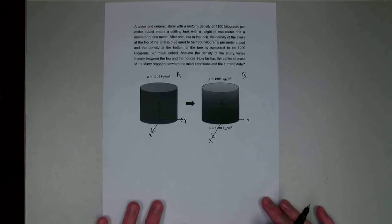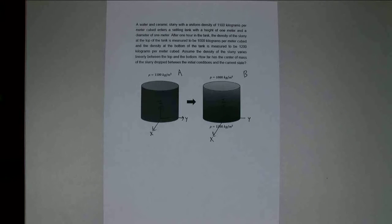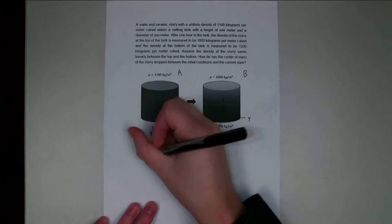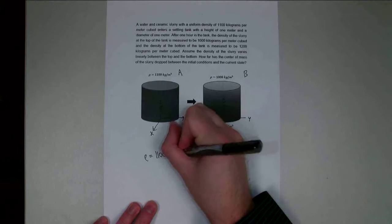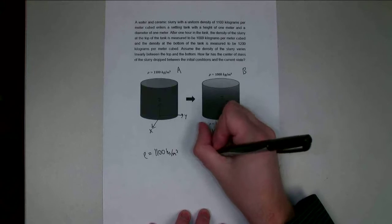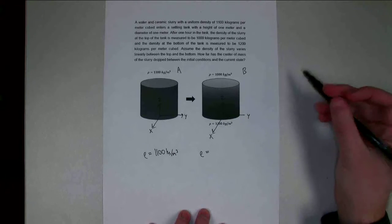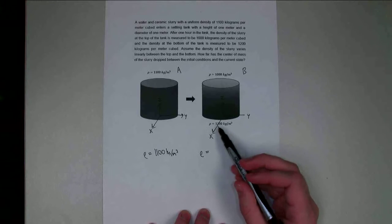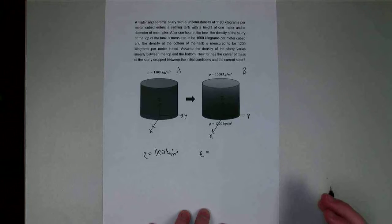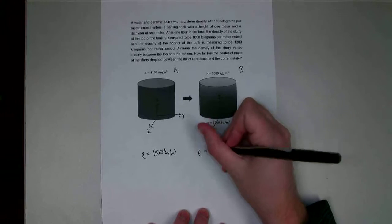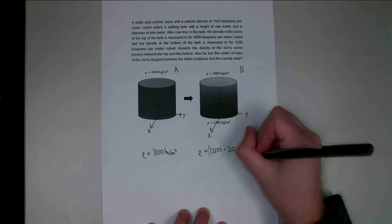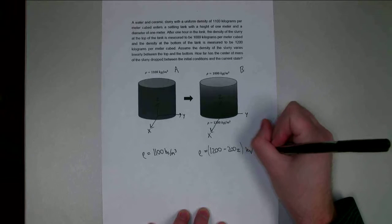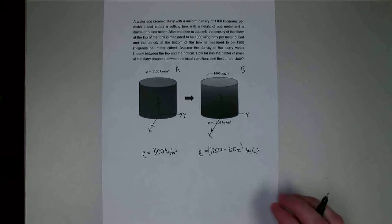The density is going to be important and needs to be defined with respect to direction. In state A, density at any point is simply 1,100 kg/m³. In state B, it's more complicated: at the base it's 1,200 kg/m³, and going up one meter it drops by 200, giving a density of 1,200 − 200z kg/m³.